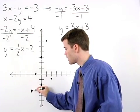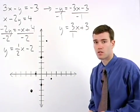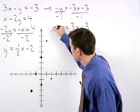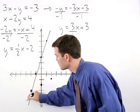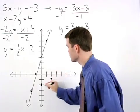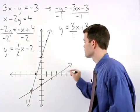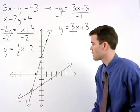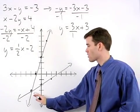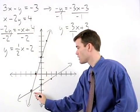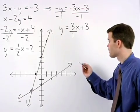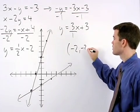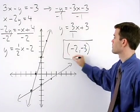If we graph our two lines, you can see that our point of intersection has the coordinates negative 2, negative 3. So that's the solution to our system.